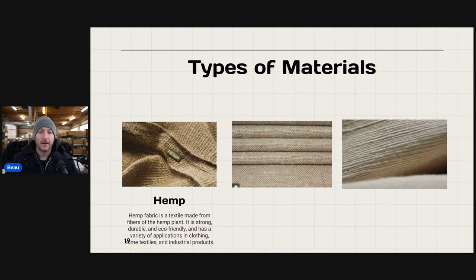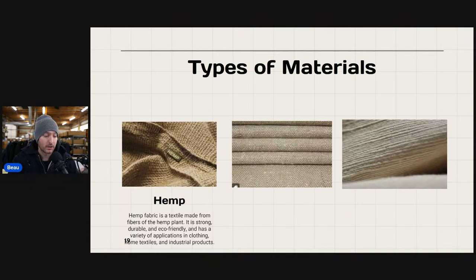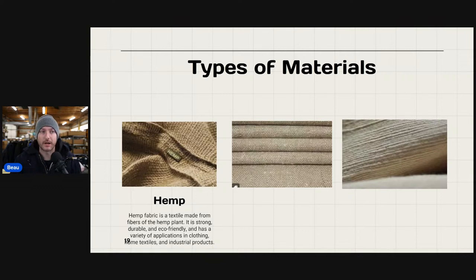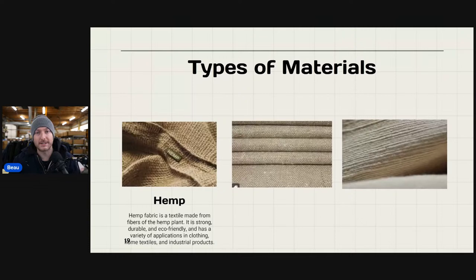Starting off, we have hemp. Hemp is a textile made from fibers of the hemp plant — strong, durable, and eco-friendly with a variety of applications in clothing, textiles, and industrial products. I pick up hemp no matter the brand when I'm outsourcing, because hemp clothing has more in-demand and a higher average sale price due to supply issues. You're not seeing a huge supply of hemp materials, but you're seeing higher demand.